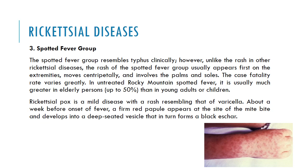The third group is the spotted fever group, which resembles typhus clinically; however, unlike the rash in other rickettsial diseases, the rash of the spotted fever group usually appears first on the extremities, more centrally, and involves the palms and soles. The case fatality rate varies greatly; in untreated Rocky Mountain spotted fever it is usually much greater in elderly persons — up to 50% — than in young adults or children. Rickettsial pox is a mild disease with rash resembling that of varicella; about a week before onset of fever, a firm red papule appears at the site of the mite bite and develops into a deep-seated vesicle that in turn forms a black eschar.